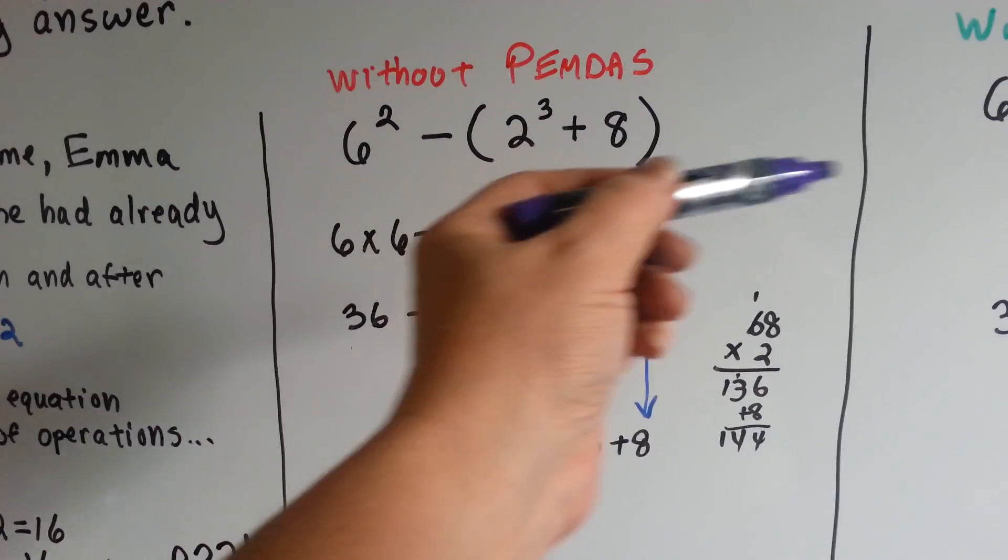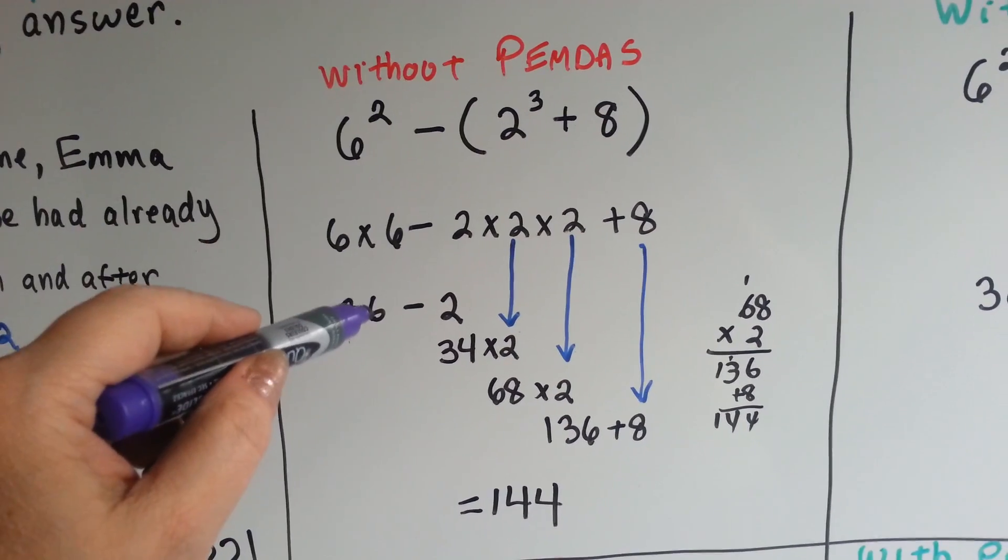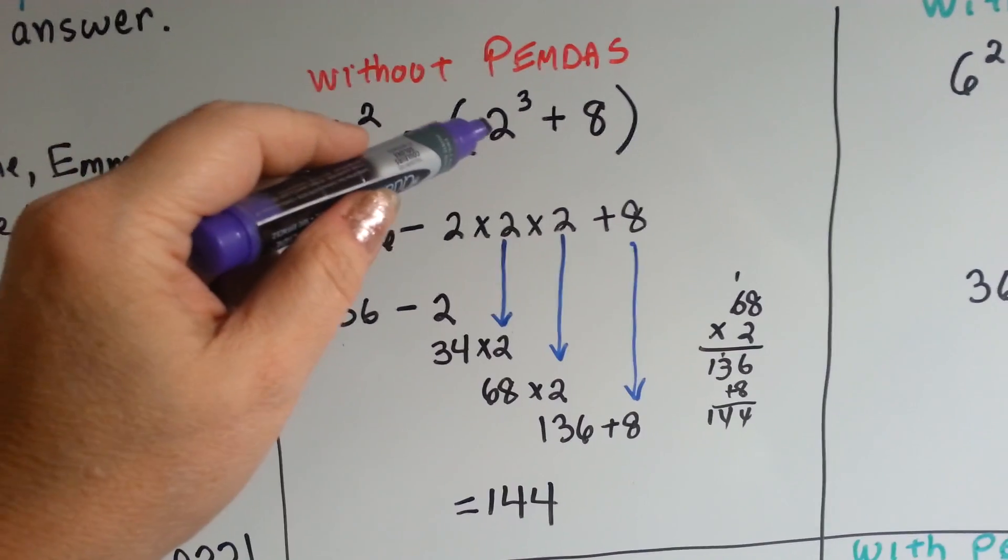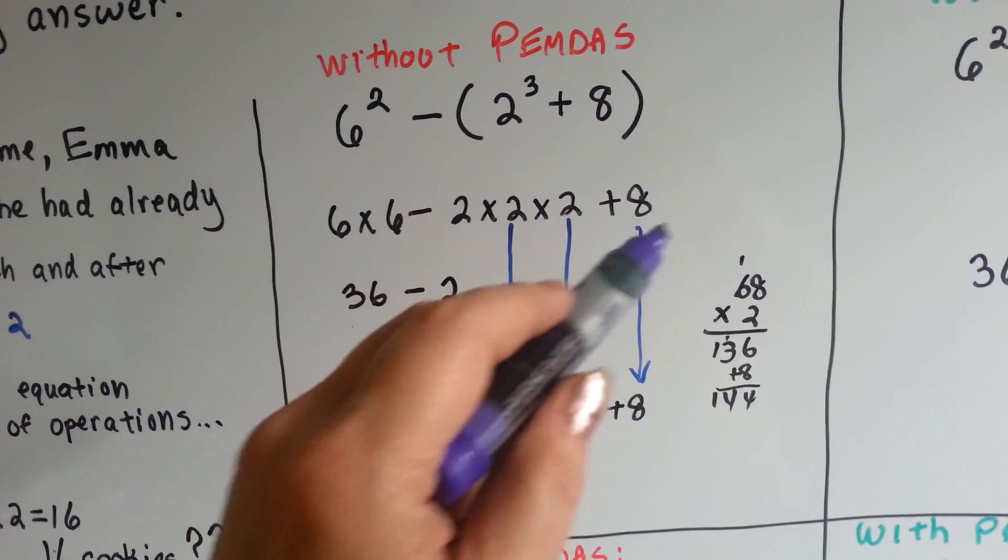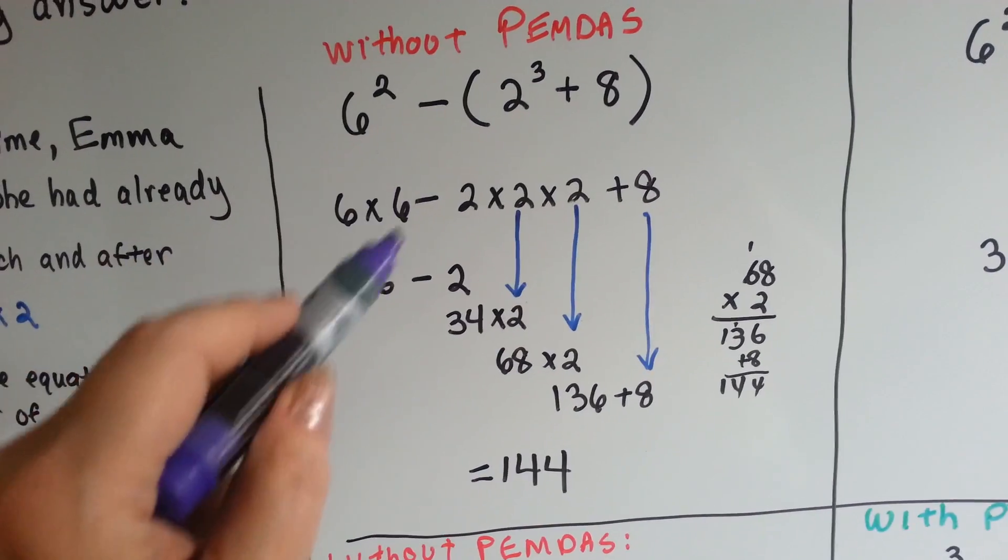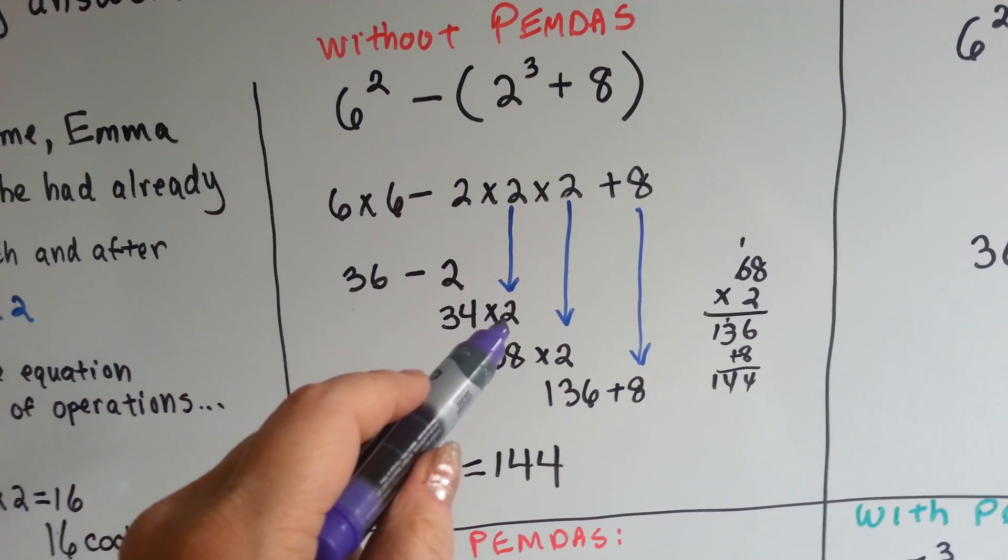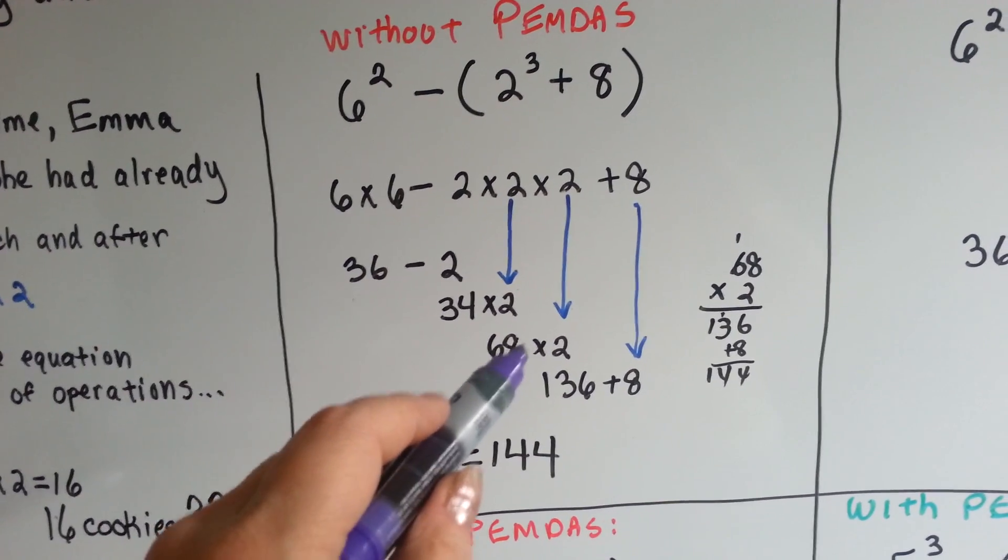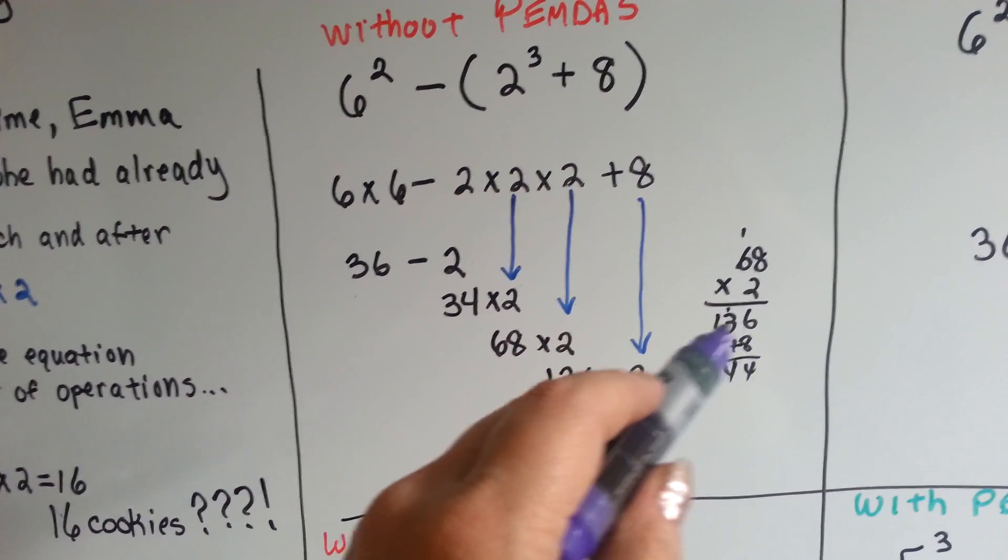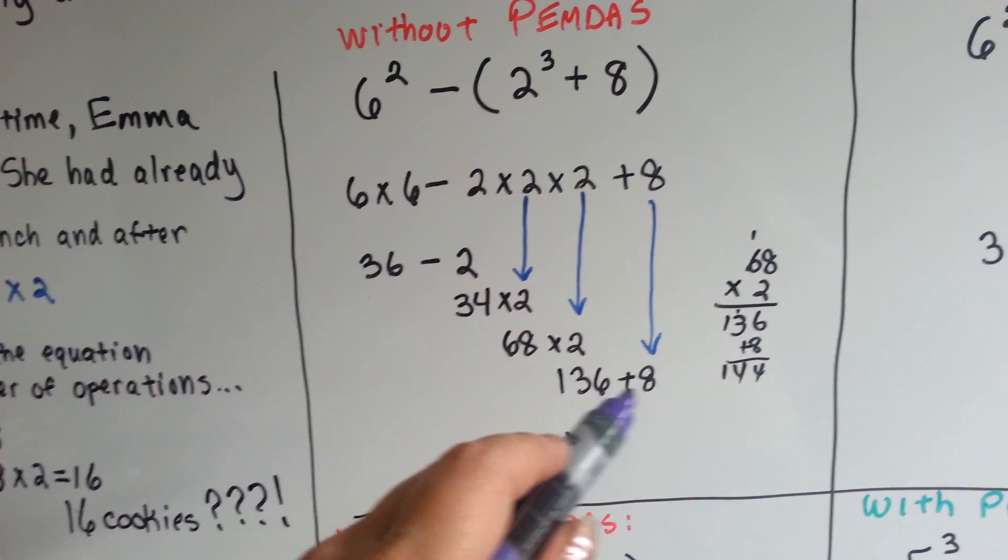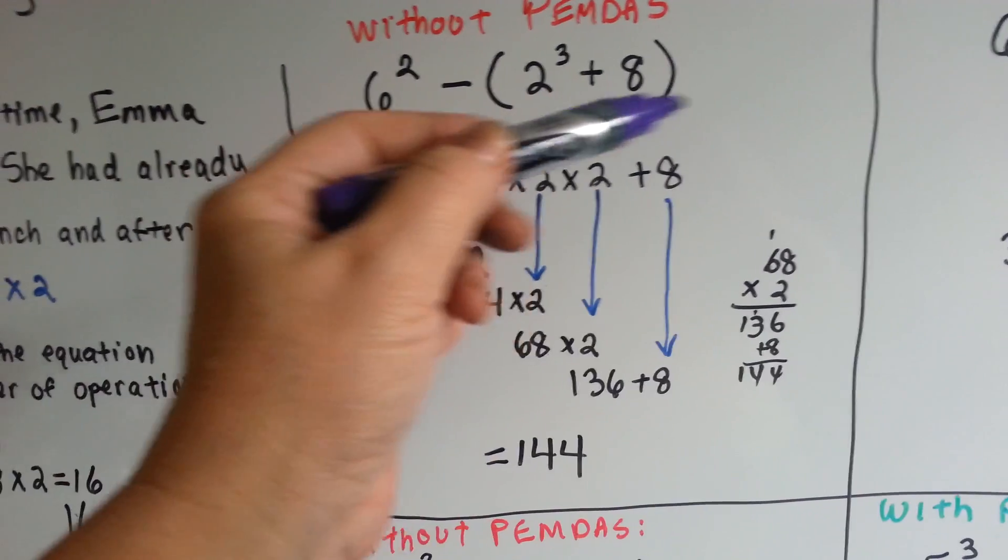So, 6 to the second power is 6 times 6. That's 36. We need to take away 2 times 2 times 2, right? So, we opened it all up. Here's our 2 times 2 times 2 plus the 8. So, now we've got 36, and we've got to take away the 2. That's 34. Now, we need to multiply that by 2. 34 times 2 is 68. Now, we need to multiply that by 2. 68 times 2 is 136. Now, we have to add the 8. We add the 8, and we have 144. So, by going straight across, we get 144.